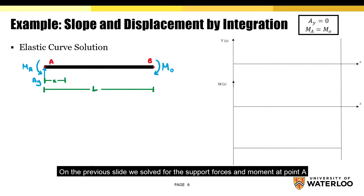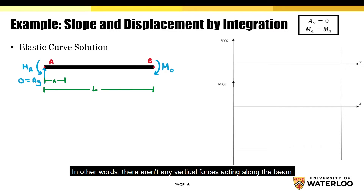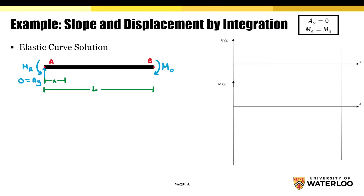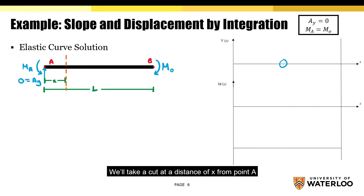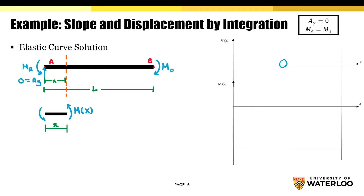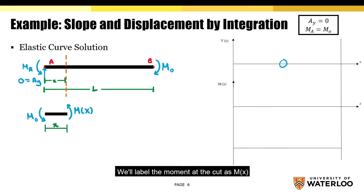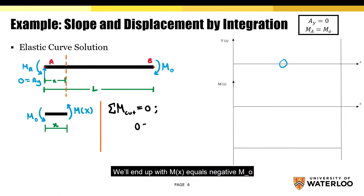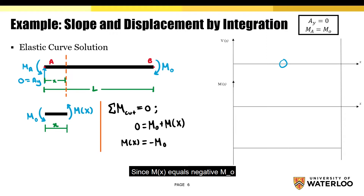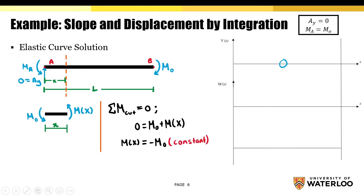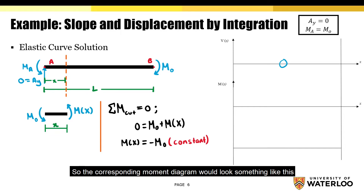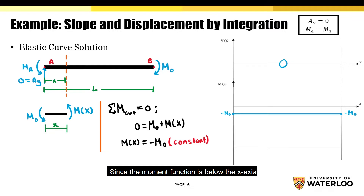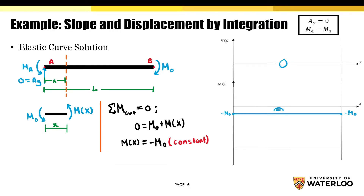We solved for the support forces and moments at point A, and figured out that the only vertical force, AY, is equal to zero. In other words, there aren't any vertical forces acting along the beam, and so the shear force diagram would just be zero. Now we'll move on to the moment diagram. We'll take a cut at a distance of x from point A and draw the corresponding free body diagram. We'll label the moment at the cut as Mx, where Mx represents the moment as a function of x. If we sum the moments about the cut, we'll end up with Mx equals negative MO. Since Mx equals negative MO, the moment function is simply constant, so the corresponding moment diagram will look something like this. Since the moment function is below the x-axis, it means that the moment produces a concave down deflection.